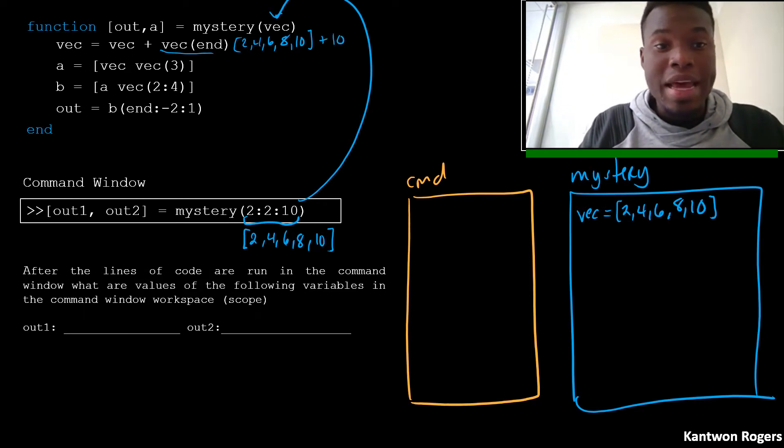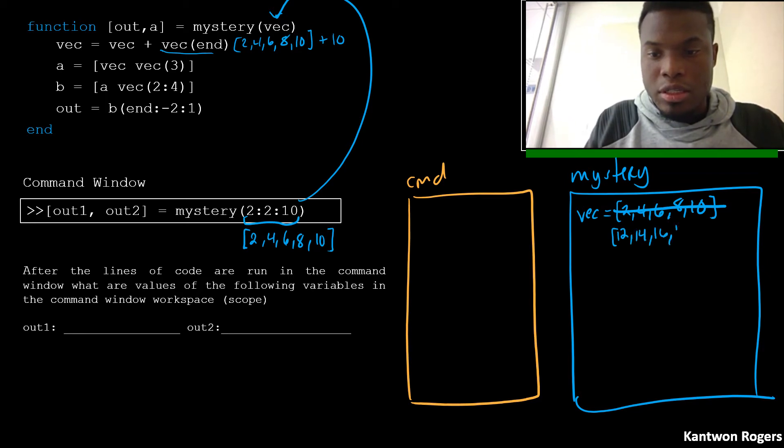So we're adding the 10 to every number inside of our vector. And we're overriding our variable vec to this new vector. So therefore, after this line of code, our vector is now 12, 14, 16, 18, and 20.